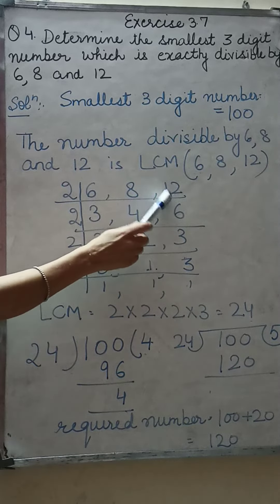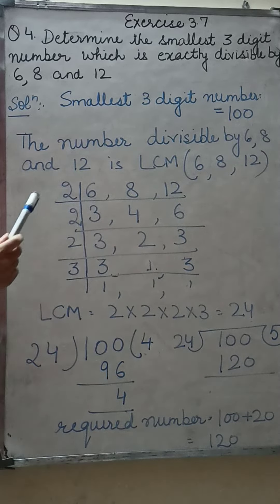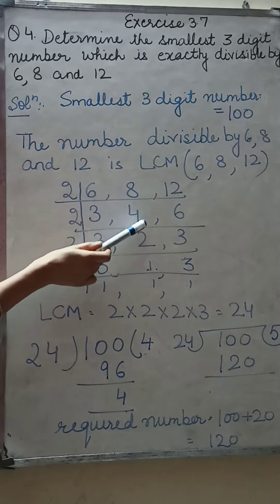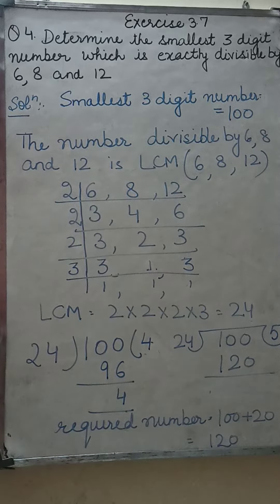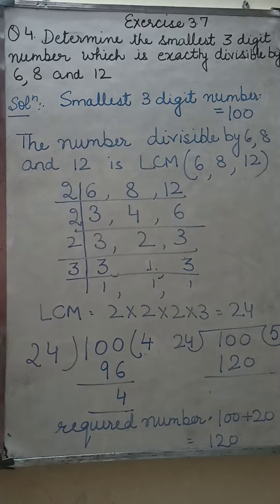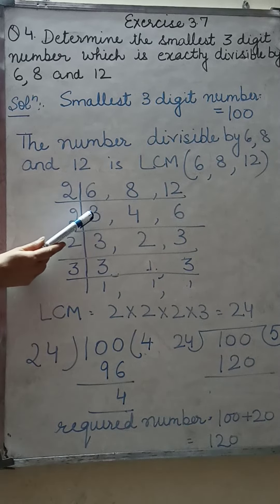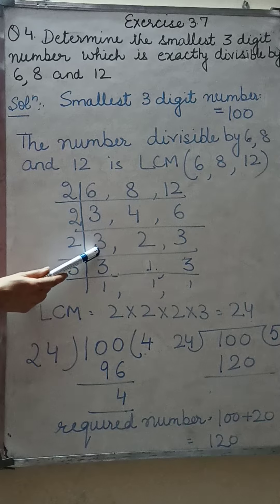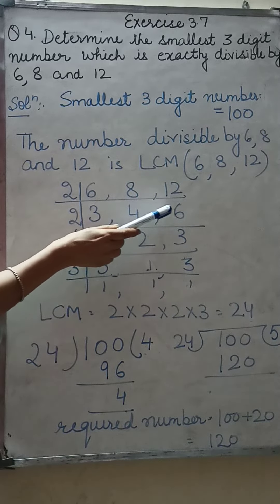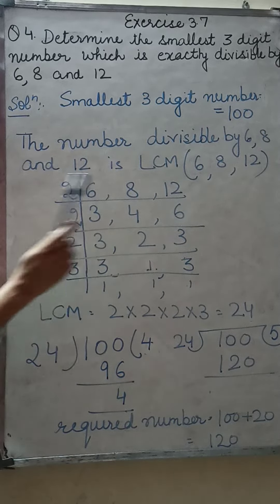So all three numbers are divided by 2 — 2 times 3 is 6, 2 times 4 is 8, 2 times 6 is 12. Now 3 is not divisible by 2, but 4 and 6 are divisible by 2, so we are again dividing by 2. If 3 is not divisible by 2, it will be written as it is. Then 2 times 2 is 4, and 6 divided by 2 gives 3.